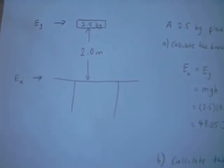The first part of the question asks, calculate the kinetic energy of the wood as it hits the table. So here I've drawn us a diagram here,